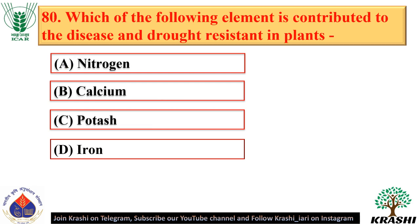Question number 80. Potash is the element that contributes to disease and drought resistance in plants — option C.